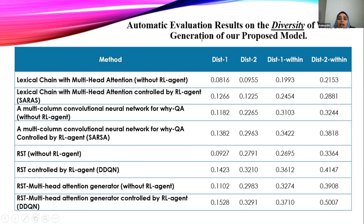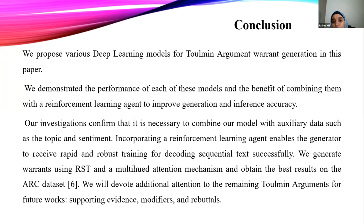The results table shows the quality and diversity metrics for each model. The rhetorical structure theory with multi-head attention controlled by the RL agent is the best performing model. Finally, we propose this approach for argument warrant generation, incorporating rhetorical structure theory with multi-head attention mechanism to obtain the best result. For future work, we will use other argument components like modifier or rebuttal. Thank you.